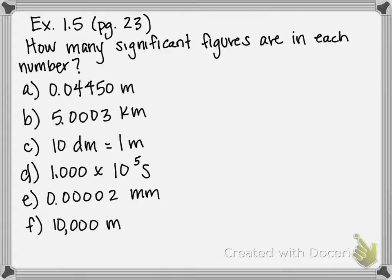This is example 1.5 on page 23 of our textbook, an example of how to count the number of significant figures in a particular number. This is a really important skill for any young scientist because you're going to be doing a lot of data collection in labs, and you need to know how to write down the correct number of significant digits.